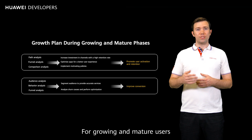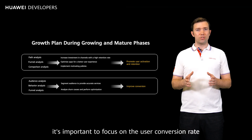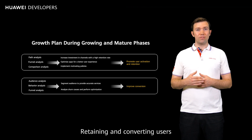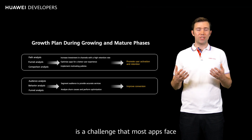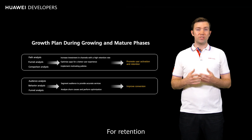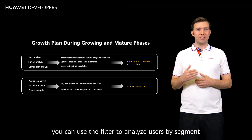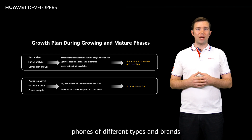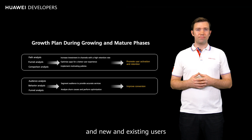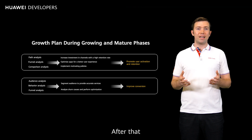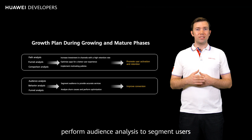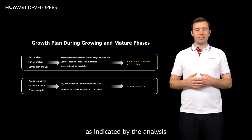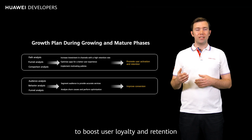For growing and mature users, it's important to focus on the user conversion rate, as well as retaining and activating users. Retaining and converting users is a challenge that most apps face. For retention, you can use a filter to analyze users by segment and find out the differences in channels, phones of different types and brands, and new and existing users. After that, perform audience analysis to segment users so that they're matched with the right services, as indicated by the analysis, to boost user loyalty and retention.